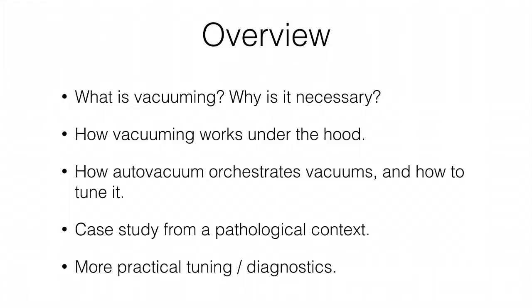First we're going to dive into how Postgres concurrency works in general, which is why something like Auto Vacuum needs to exist in the first place. Next we'll walk through the specifics of what vacuum processes do and how the Auto Vacuum Daemon orchestrates those. Then we'll walk through how I generally think about tuning these things. And at the end I'll walk through a case study from about two years ago at Heap in which we had a totally pathological worst case scenario for vacuums.